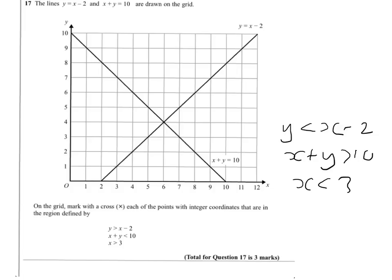So if you look closely here, y is less than x minus 2, the opposite of y is greater than x minus 2, and so on for the other two. And what this will leave is the region where we need to mark our crosses, because what we'll have left is where we're allowed to go.